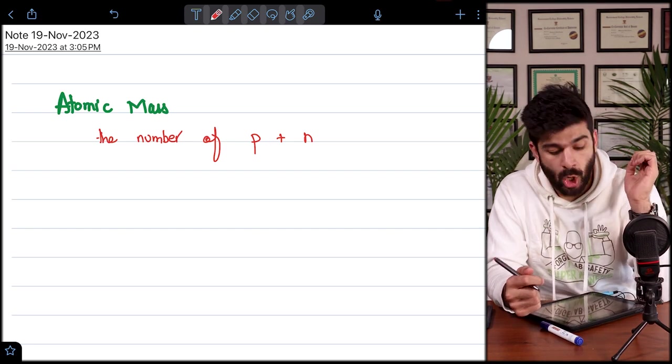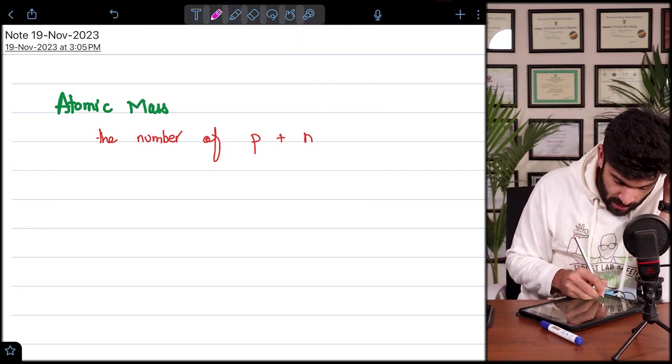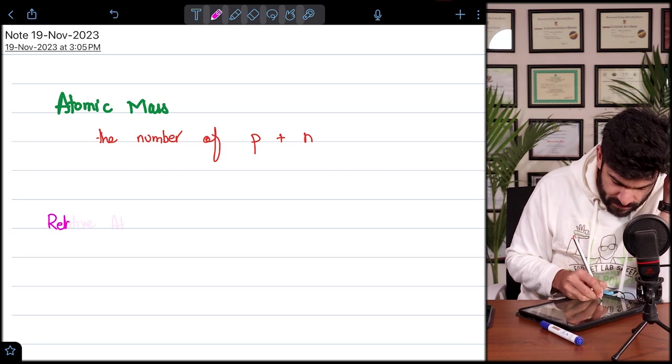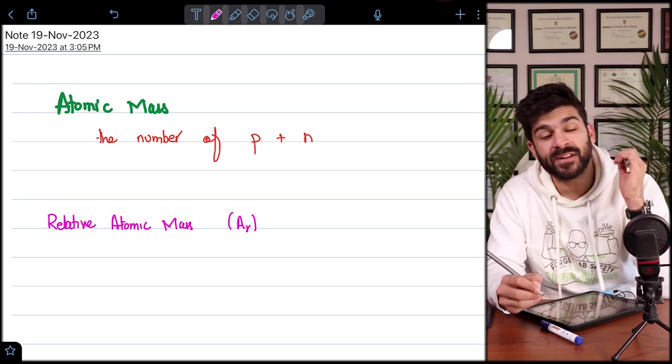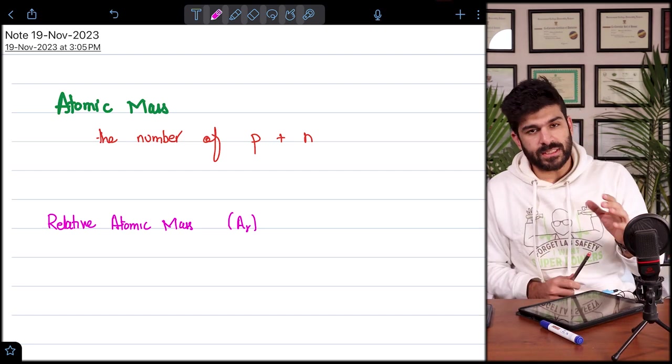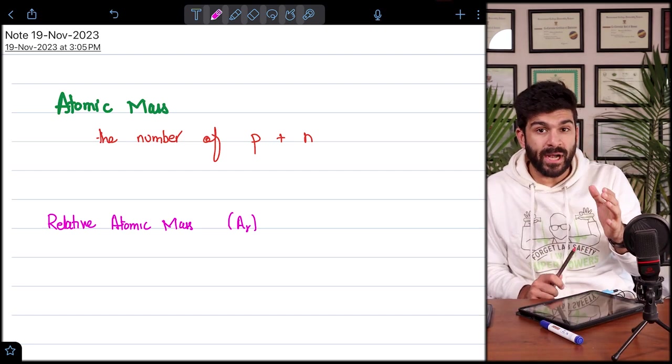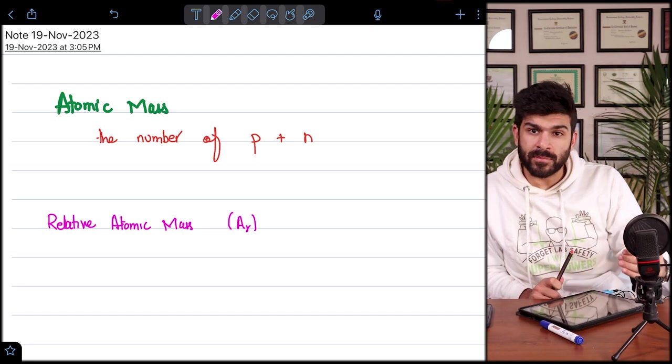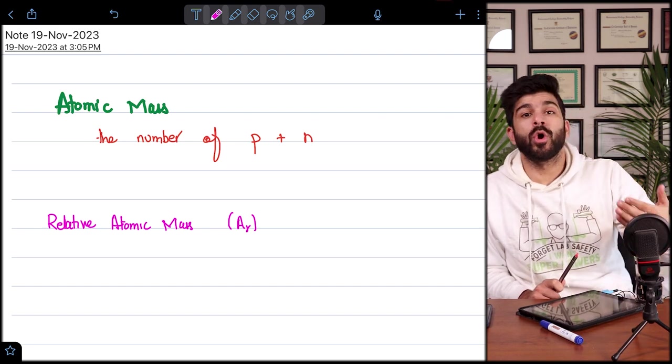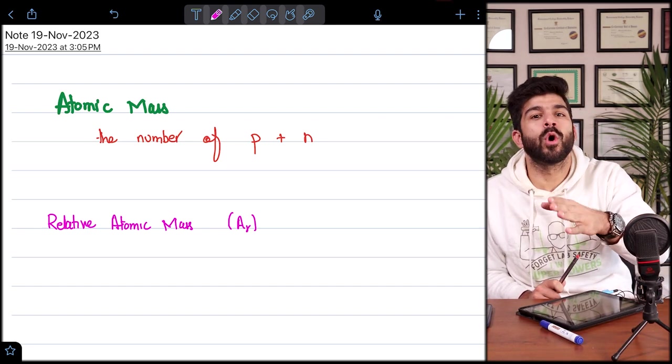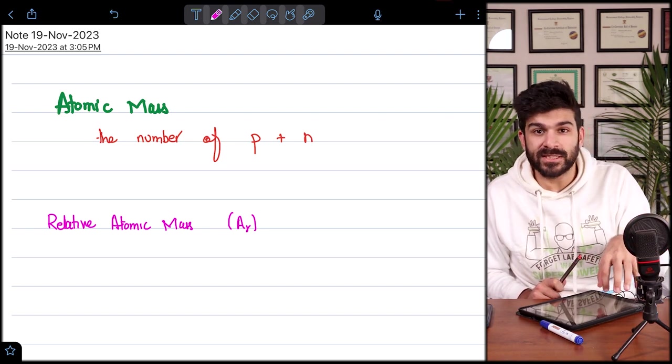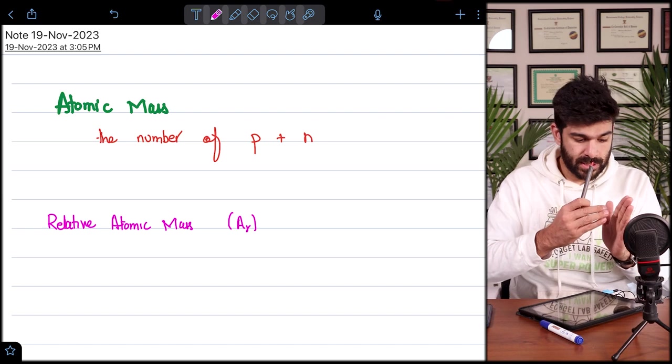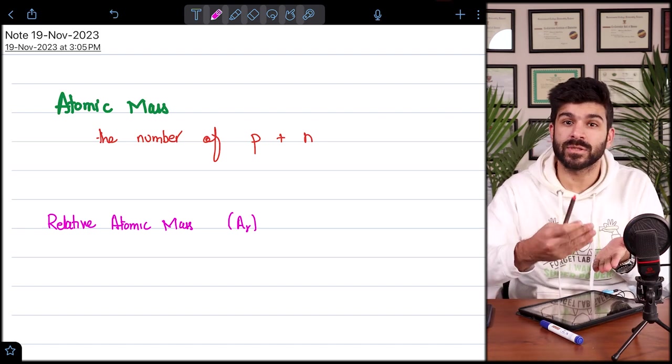But when we talk about an important term which is the relative atomic mass also denoted by AR, the relative atomic mass, this is somewhat related to the atomic mass but the point is the term relative comes here. Now we all know what relative means.